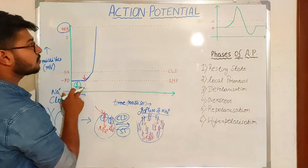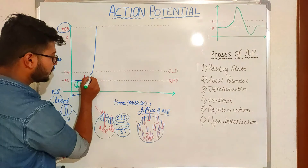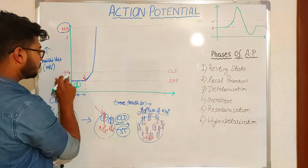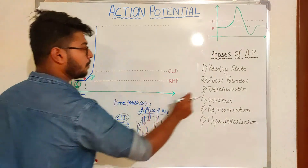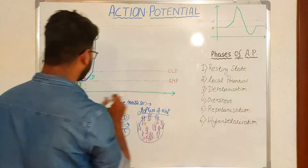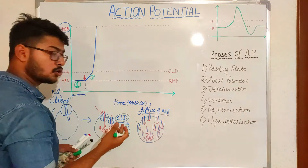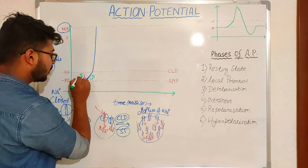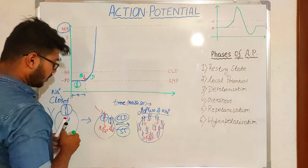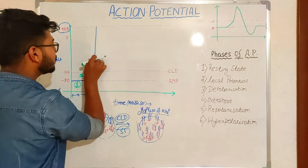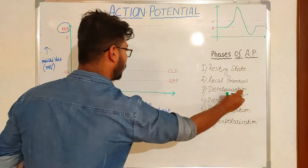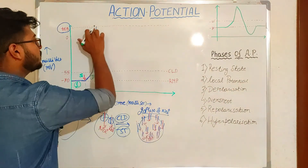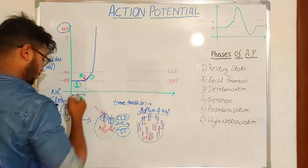To summarize the phases so far: the first phase is the resting state. The second phase — where the potential increases from minus 70 to minus 55 millivolts — is the local potential phase, showing a local response to the stimulus. The red mark depicts the stimulus. The third and important phase is the depolarization phase, where the potential rapidly rises.